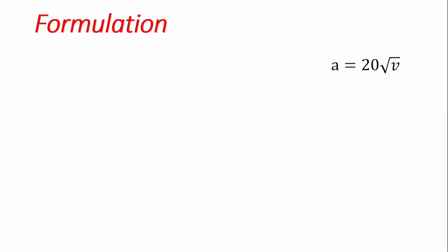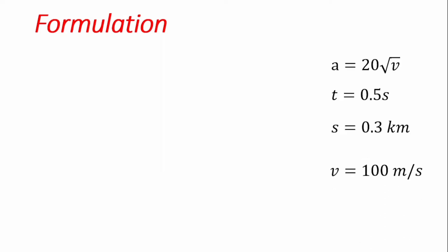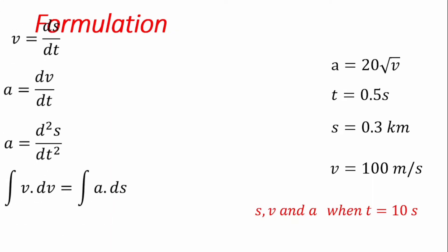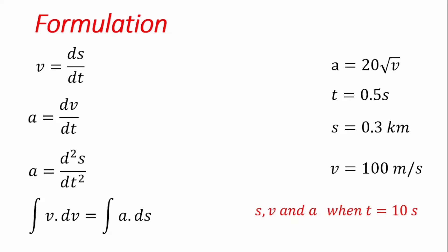To solve this problem, we must find a relationship between displacement, velocity, and acceleration as a function of time, so that we can input the value t equal to 10 seconds into those equations to evaluate the displacement, velocity, and acceleration at that point. We'll start by first determining an equation for velocity, then for displacement.